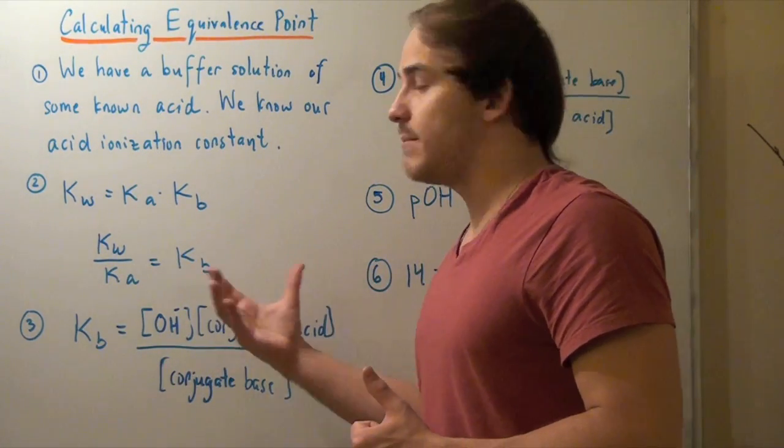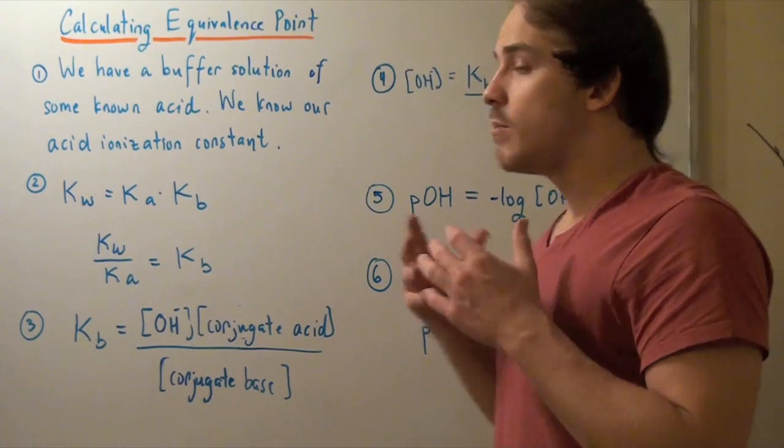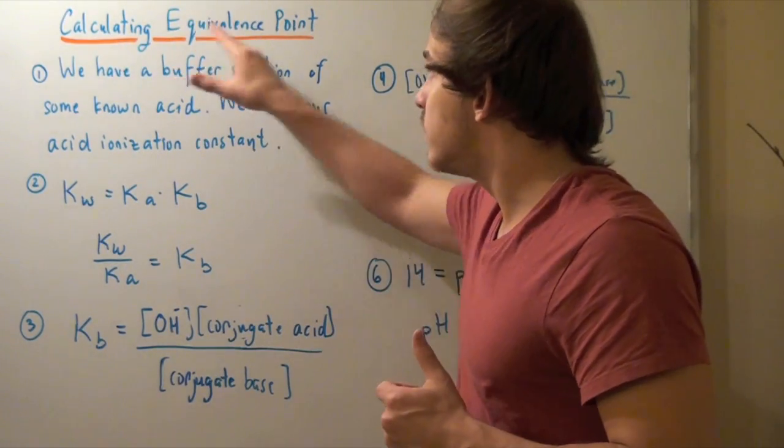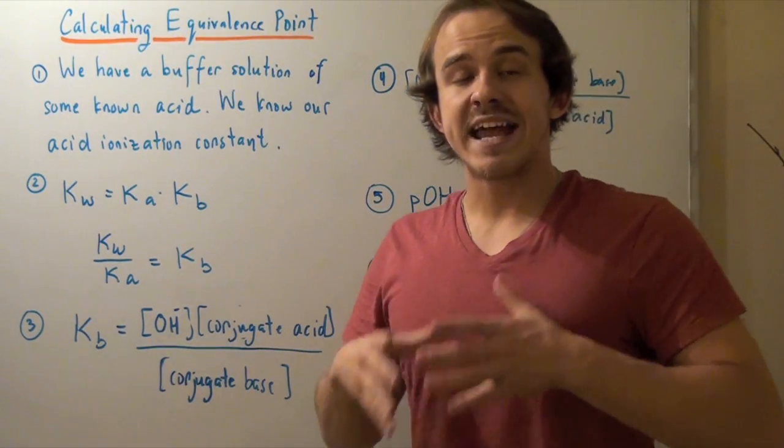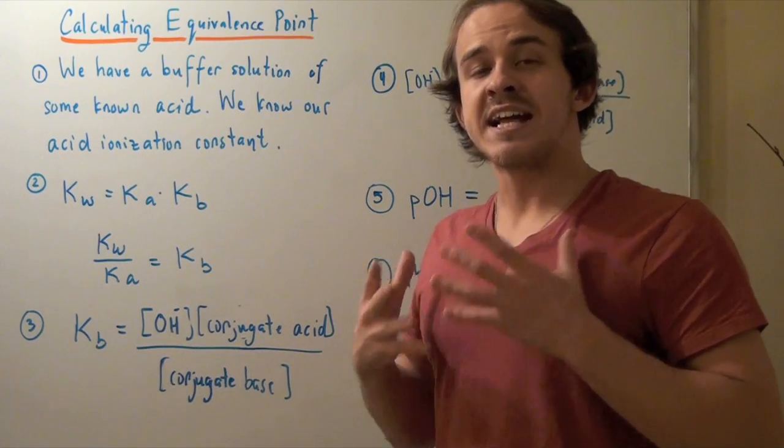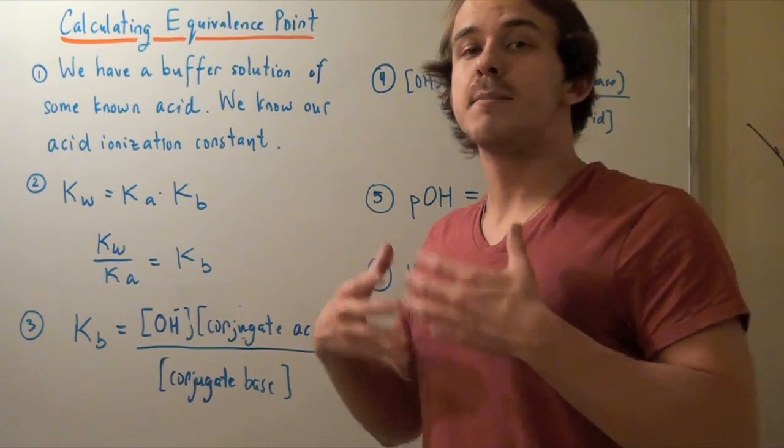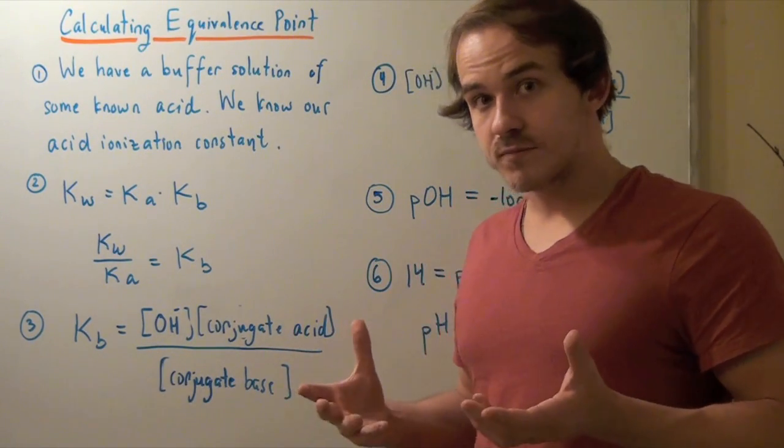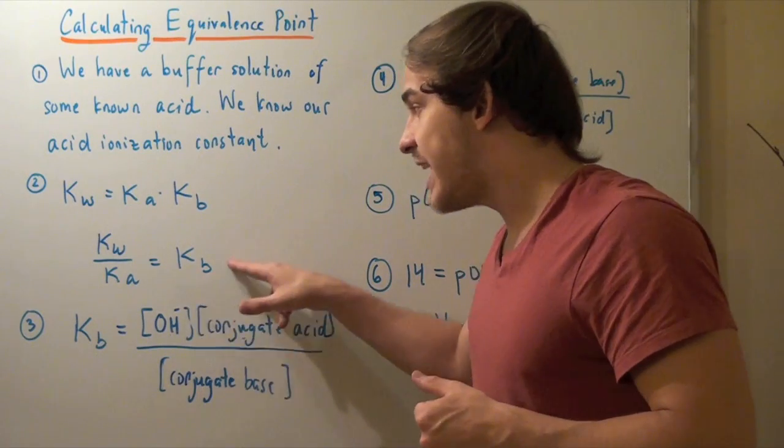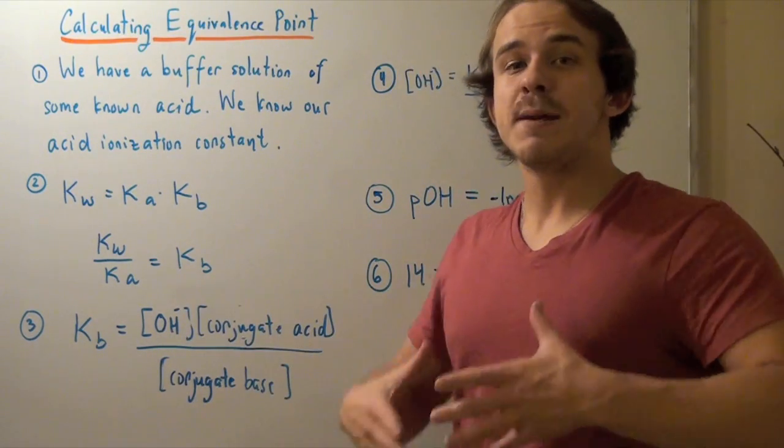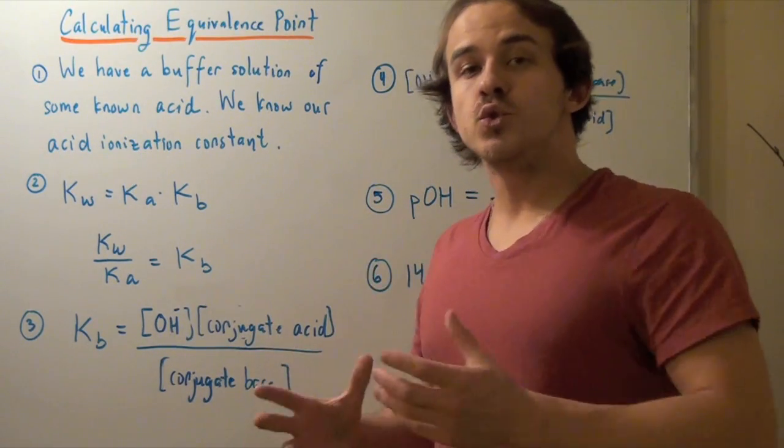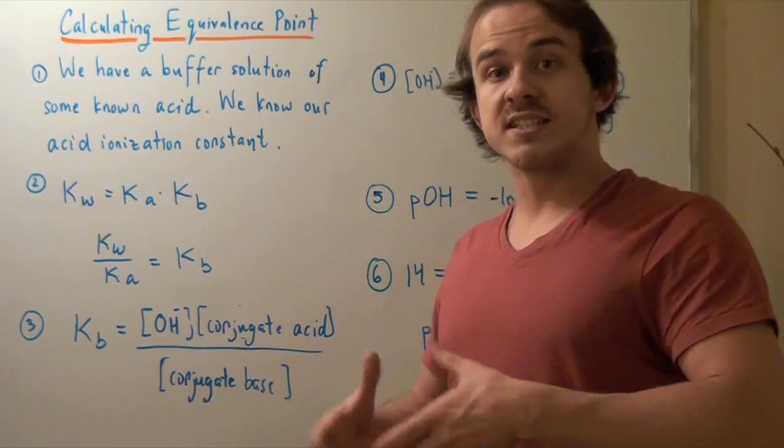Now, why do we need the Kb? Well, remember what the equivalence point is. It's the point at which all the acid has been neutralized by some base, right? So, I can use the Kb to find the amount of base needed to neutralize our acid completely.